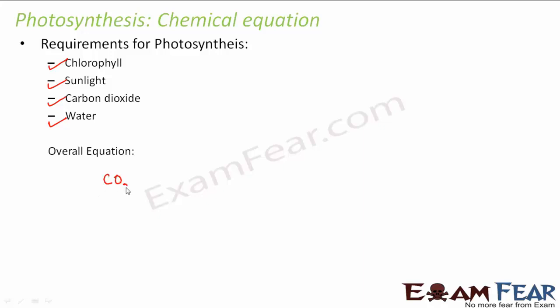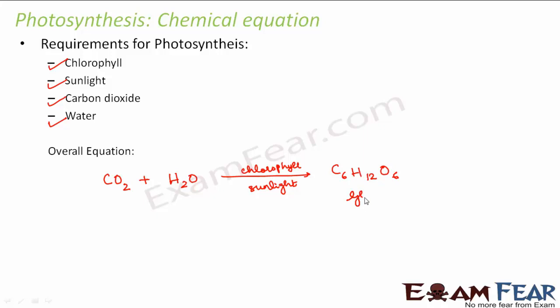Let us now look at the equation for photosynthesis. The overall equation is: carbon dioxide plus water, in the presence of chlorophyll and sunlight, gives glucose plus water plus oxygen. The food which is prepared is stored in the form of starch, and starch is a polysaccharide made up of many glucose units. Glucose is C6H12O6. Carbon dioxide and water combine to form glucose in the presence of chlorophyll and sunlight. Along with glucose, water is also produced and oxygen is emitted.